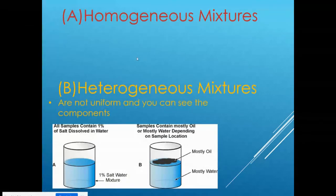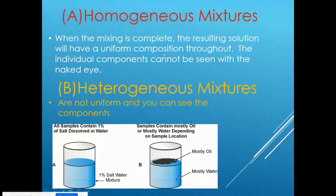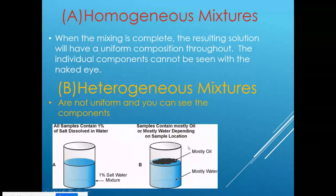In a homogeneous mixture, when mixing is complete, the resulting solution has a uniform composition throughout and the individual components cannot be seen with the naked eye. For example, 1% salt dissolved in water — if properly mixed and the salt dissolves, we cannot see it, so we call it homogeneous. Oil and water, on the other hand, are not uniformly mixed; we can clearly see the two components — that is a heterogeneous mixture.